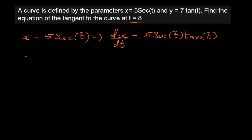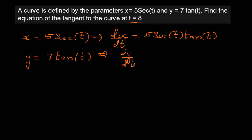And y is given as 7 tan t. The derivative of tan is sec²t, so dy/dt = 7 sec²t.